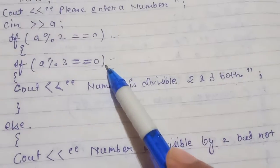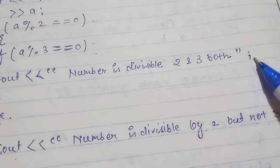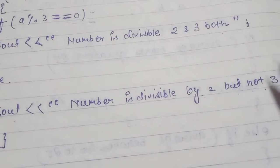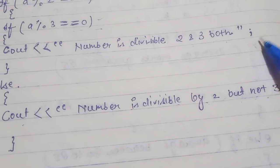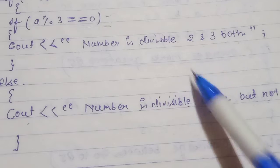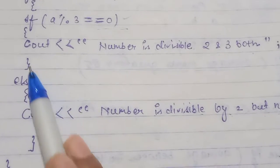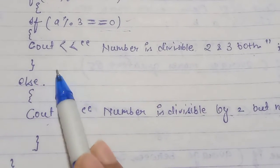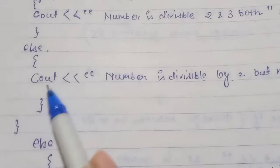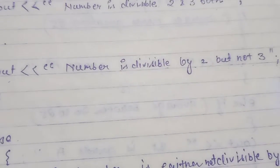After each output statement we use a semicolon to terminate the line. We then close this inner block. The else condition follows: if the inner if is not satisfied, it outputs 'number is divisible by 2 but not 3.'